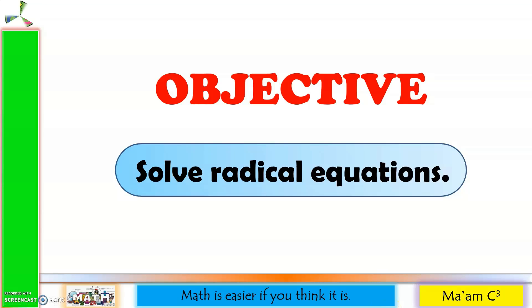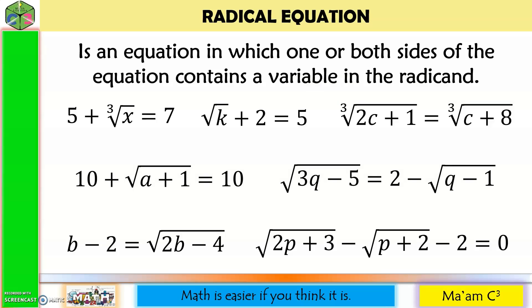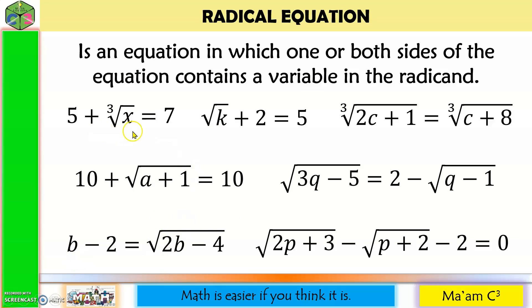Our objective in this lesson is to solve radical equations. A radical equation is an equation in which one or both sides contains a variable in the radicand. Since this is an equation, there must be an equal sign. The radicand should contain a variable — it could be on one side or both sides of the equation.